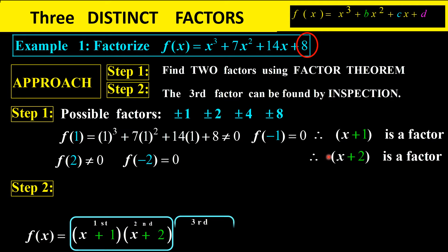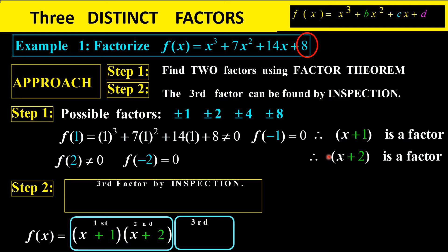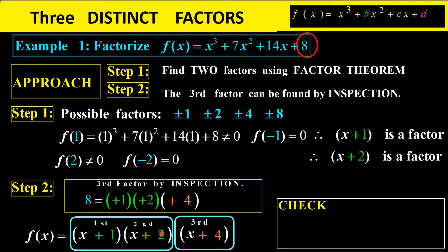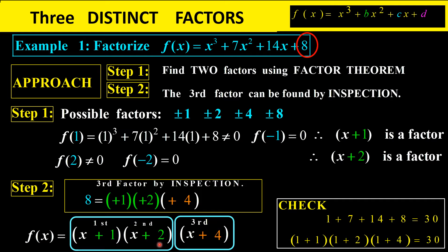For the third factor we use inspection. Looking at the constant 8, we already have 1 and 2 from our factors. 1 times 2 is 2, and 2 times 4 gives 8, so the third factor is x plus 4. We can verify: summing the coefficients 1 plus 7 plus 14 plus 8 gives 30, and substituting 1 into the factors (1+1)(1+2)(1+4) also gives 30. These are the correct factors.